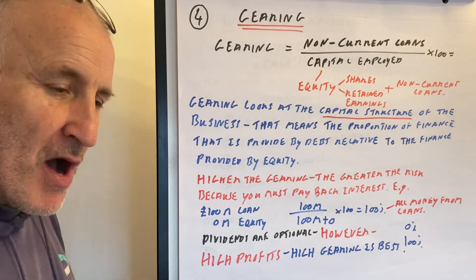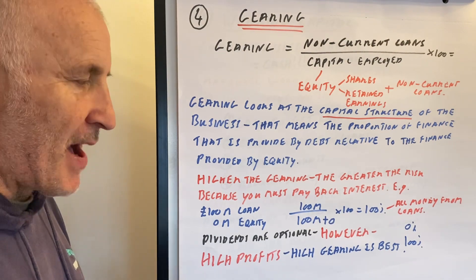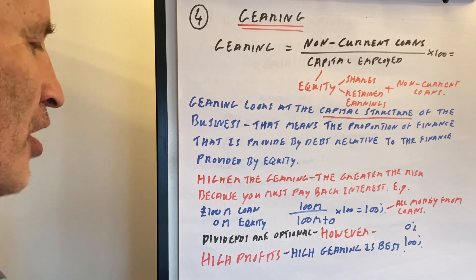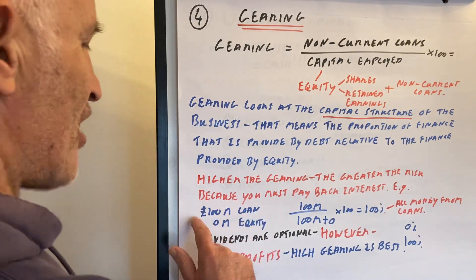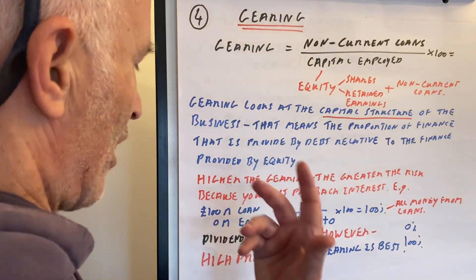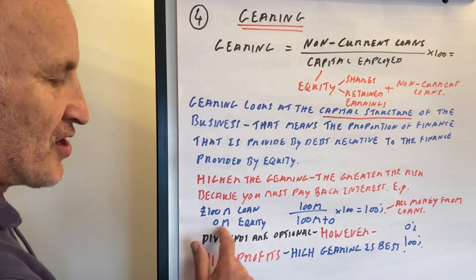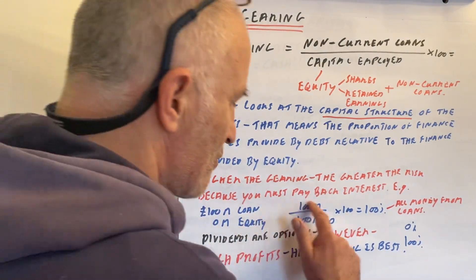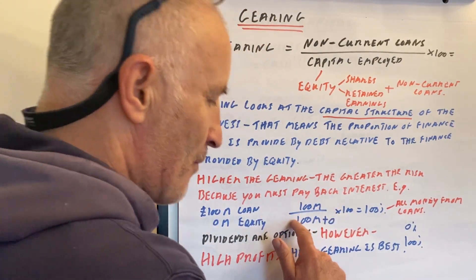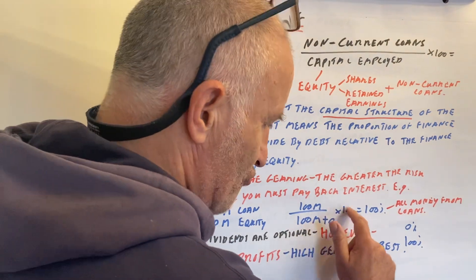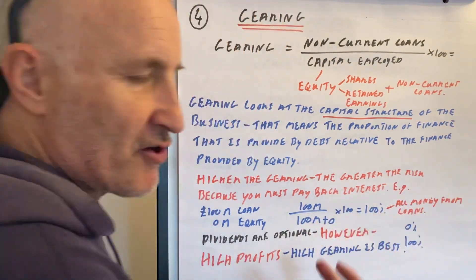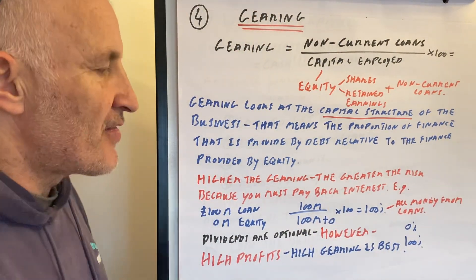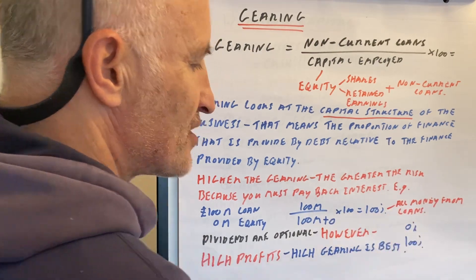Because what that means is more of your money has come from loans. With loans, you must pay the money back each month, and if you don't, then the whole business can in fact go under. In this case, we've got 100 million pounds worth in loans and nothing in equity. So we do 100 million divided by 100 million plus zero times 100, which is obviously 100%.